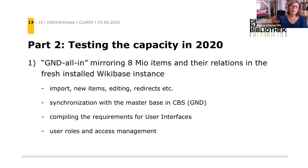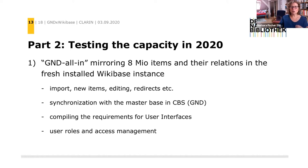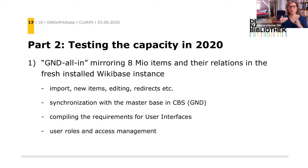We are not planning to replace the GND where it is currently hosted, because that software is not only used for the GND but also for cataloging and user services — it is a whole system needed to administrate our library and cooperate with other libraries in Germany, Switzerland, and Austria. We will keep the GND in its original master base in the CBS system, but we need to synchronize what is done in the GND and what is done in our Wikibase instance.